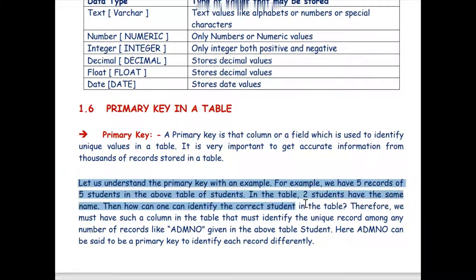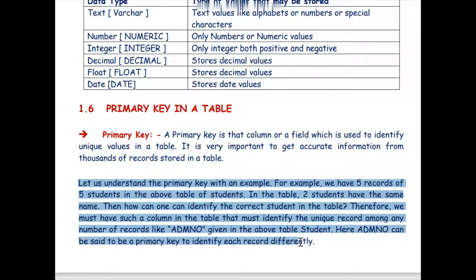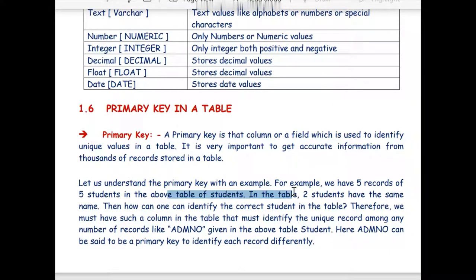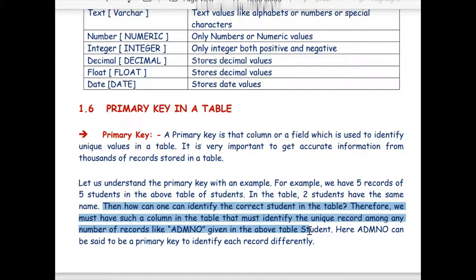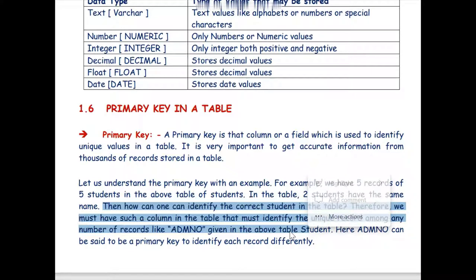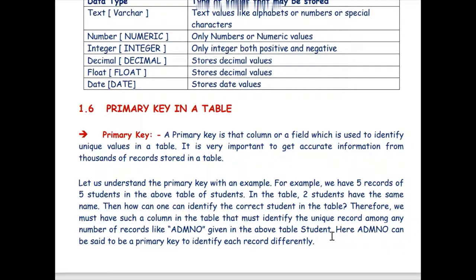Further let us understand the example again with the help of an example. For example we have five records of five students in the above table of students. In the table two students have the same name. Then how can we identify the correct student in the table? Therefore we must have such a column in our table that must identify the unique record among any number of records like admission number given in the above table student. Here admission number can be said to be a primary key to identify each record differently.